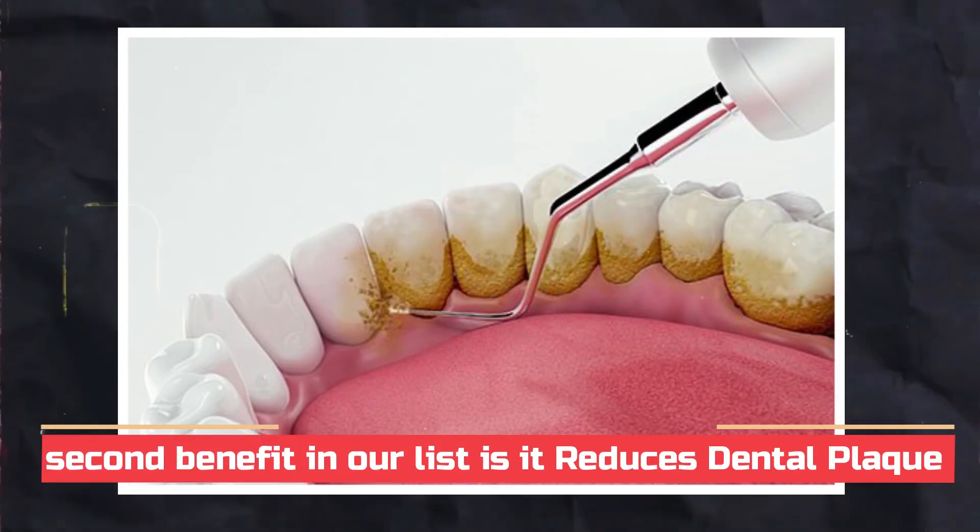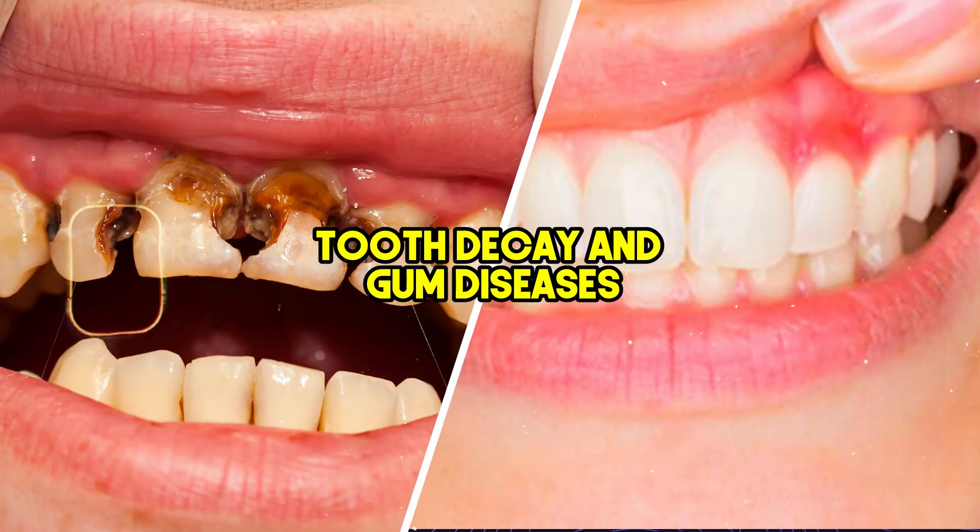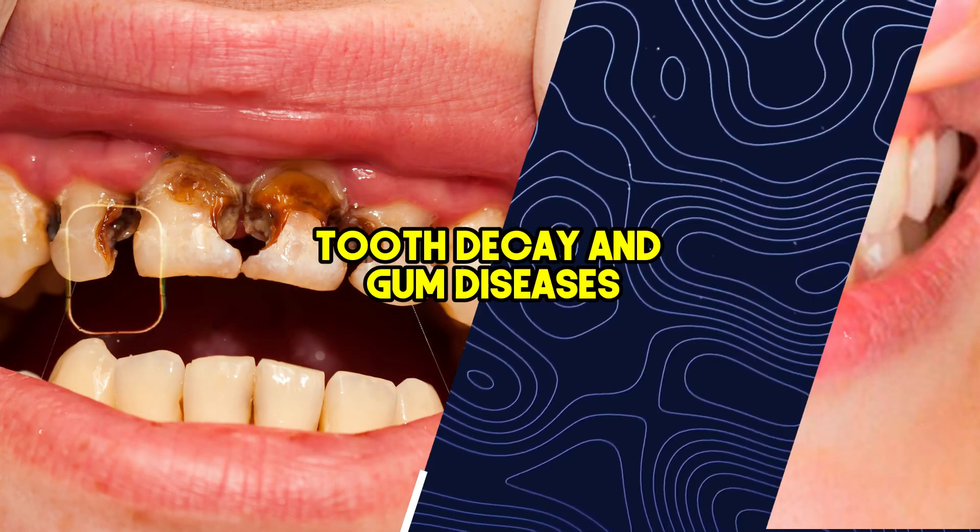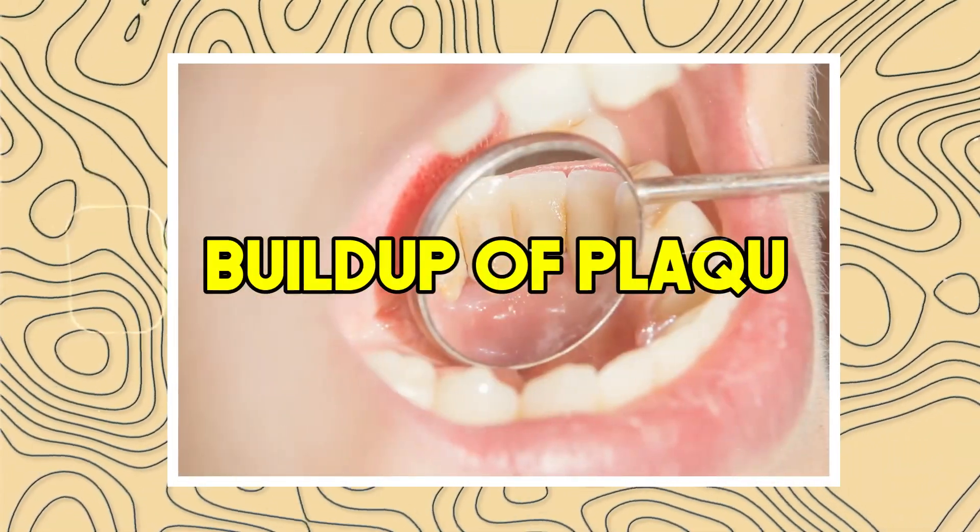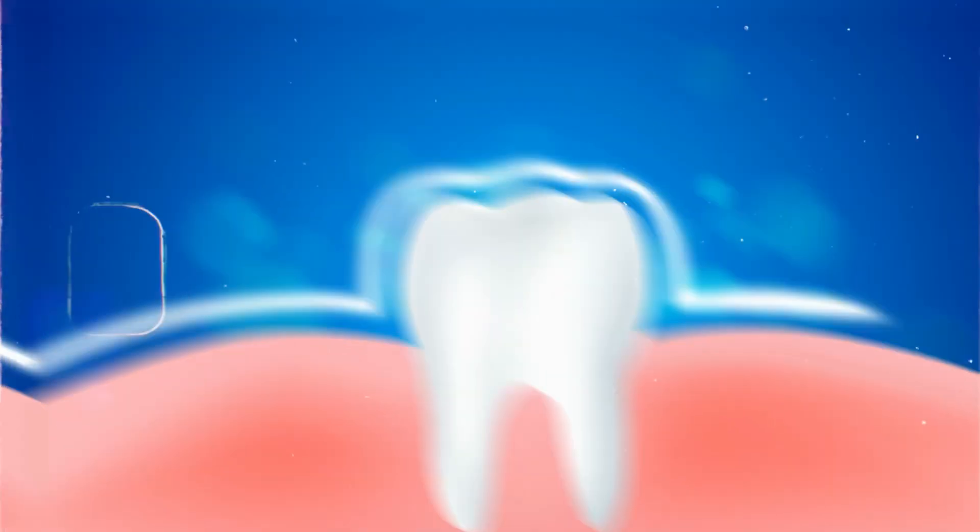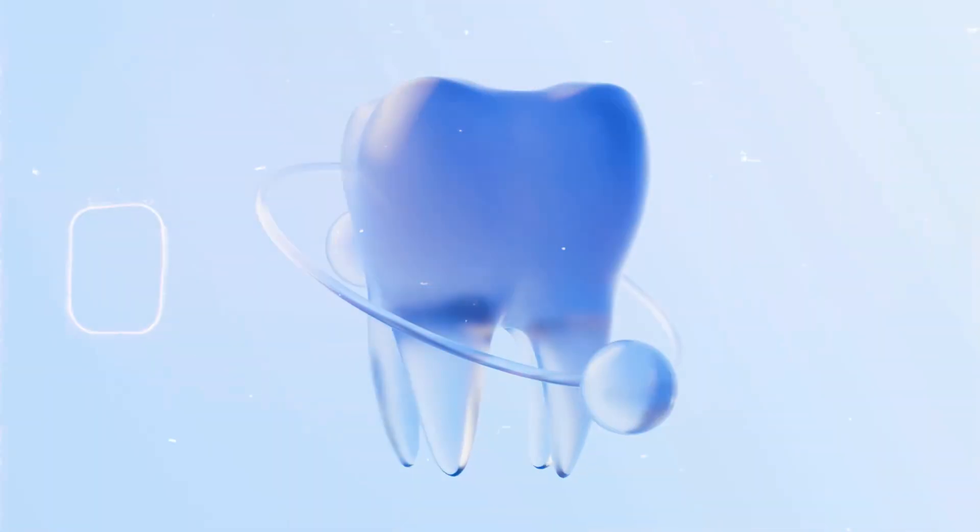Next, the second benefit in our list is it reduces dental plaque. Tooth decay and gum diseases are common health problems that many people face. One of the best ways to prevent these issues is by reducing the buildup of plaque, which is a biofilm of bacteria on the teeth. Aloe vera can play a significant role in maintaining oral health.